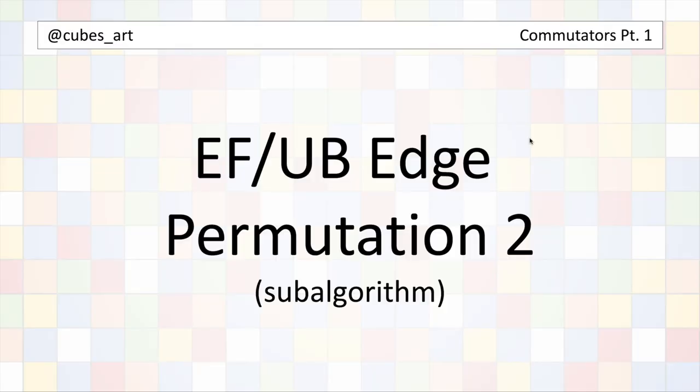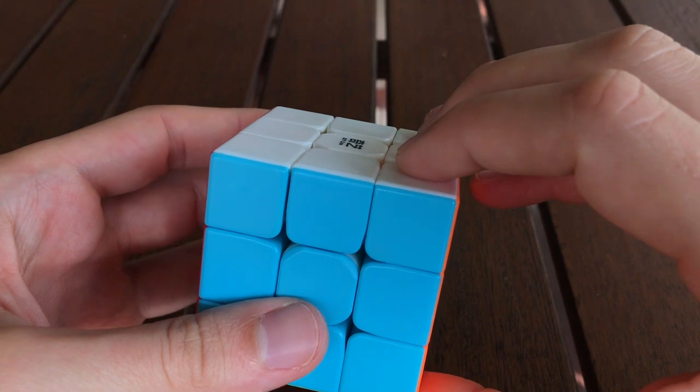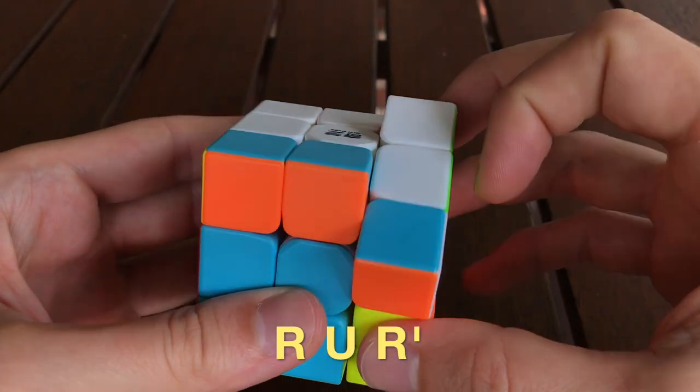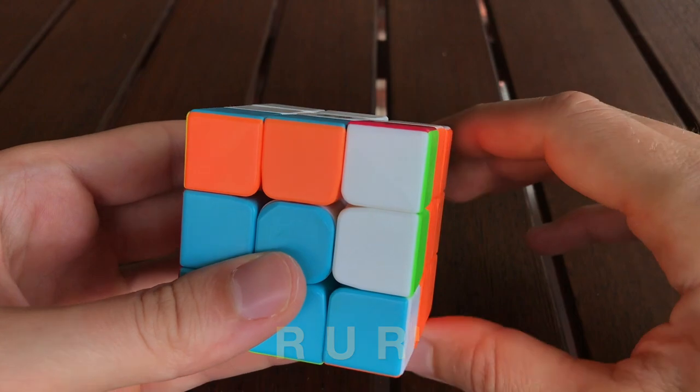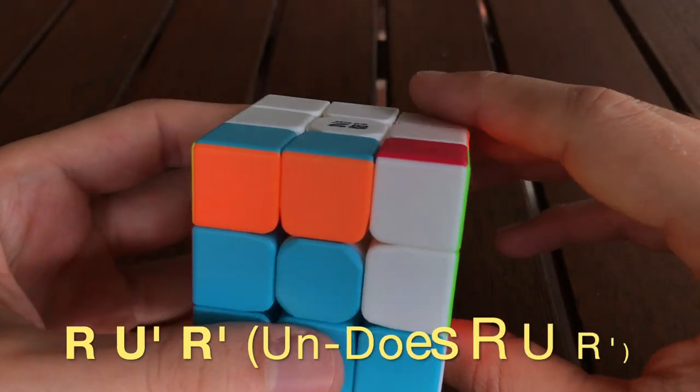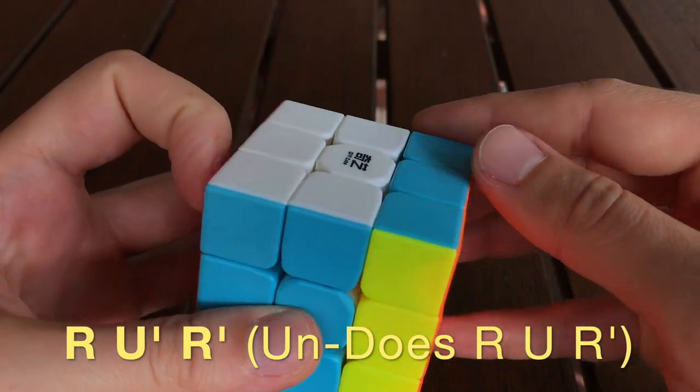Next I'll talk about a similar edge permutation that moves the same three pieces but in a slightly different way. So here's the sub-algorithm for this version of the edge permuting algorithm, R U R'. And to undo this sub-algorithm, we do R U R'.